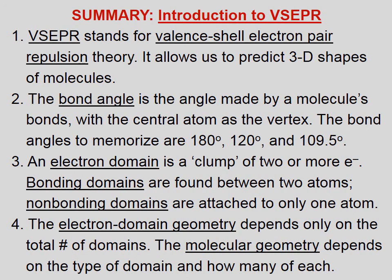Three, an electron domain is a clump of two or more electrons. Bonding domains are found between two atoms. Nonbonding domains are attached to only one atom. Four, the electron domain geometry depends only on the total number of domains. The molecular geometry depends on the type of domain and how many of each.